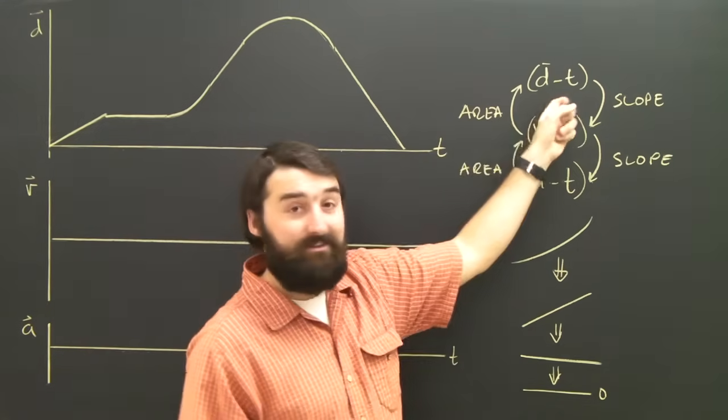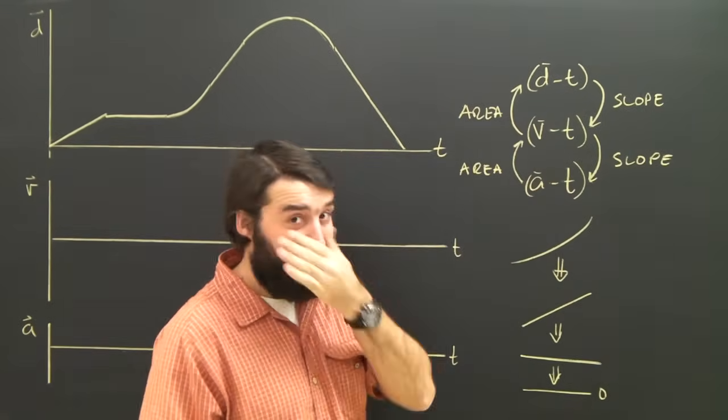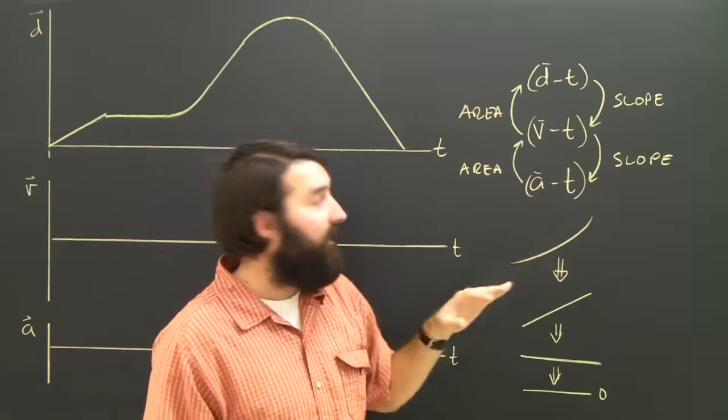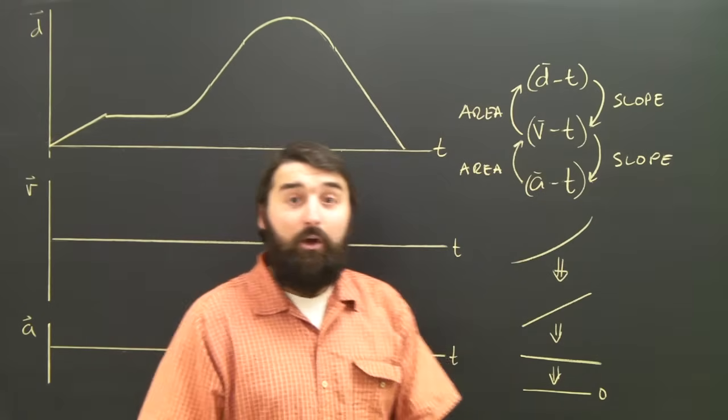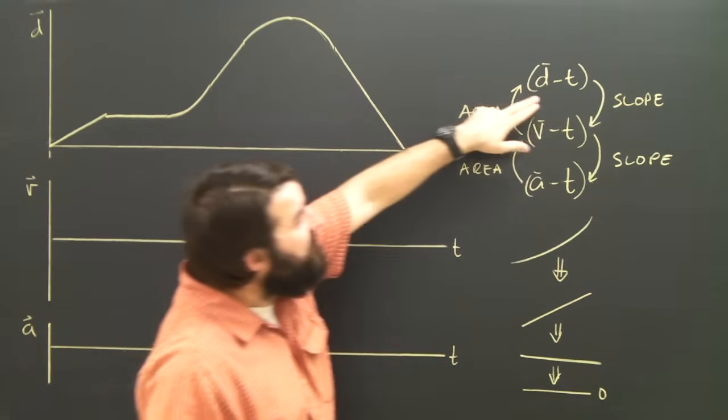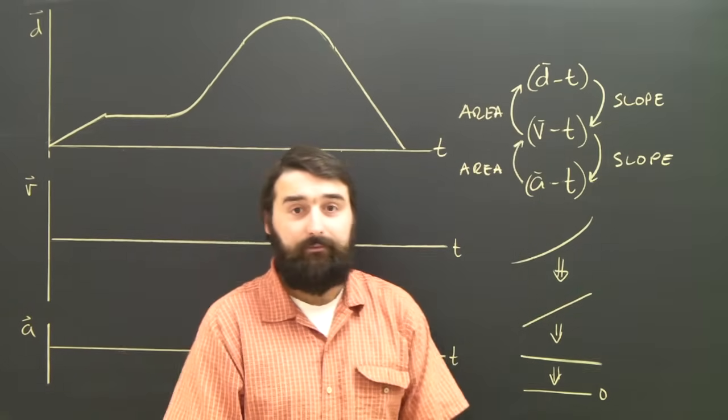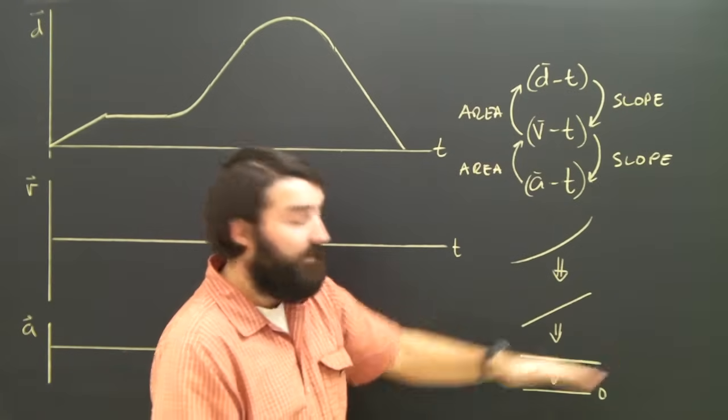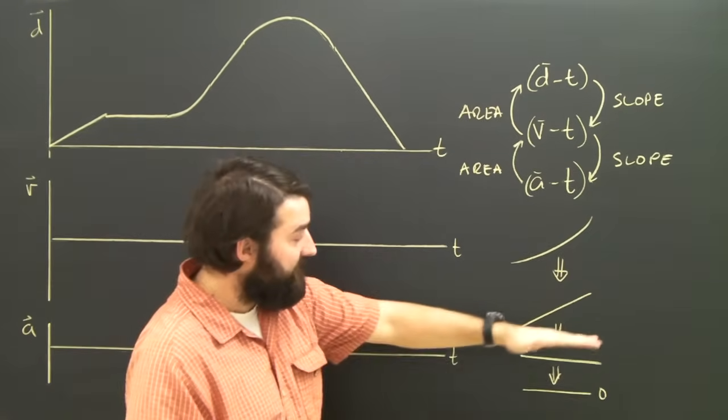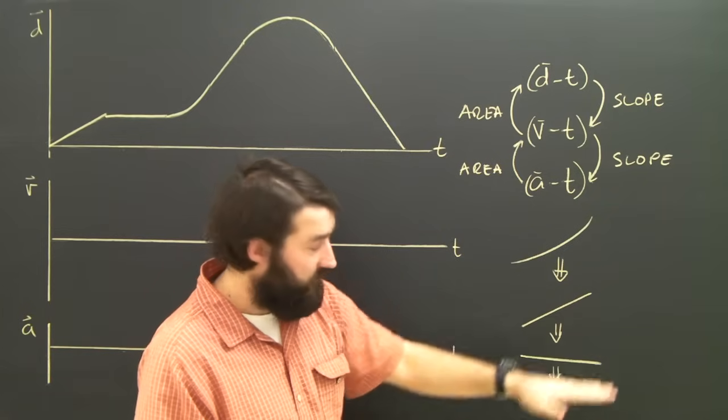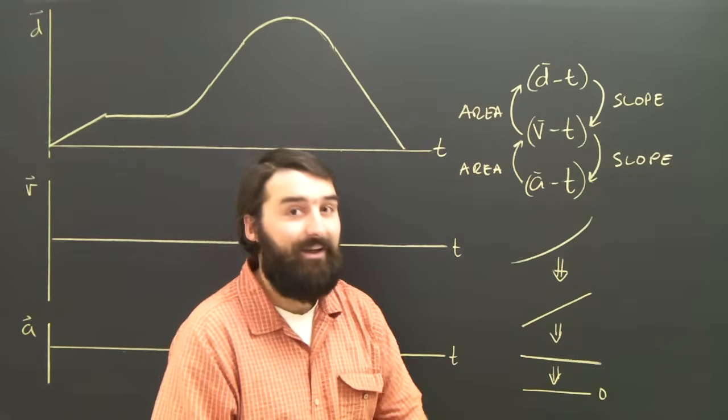As a little reminder here, we know that if we take the slope of a DT graph, we get the velocity, and if we take the slope of a velocity graph, we get the acceleration. Which means in practice that if our DT graph is curved, we take the slope, we're going to get a diagonal line. And if we take the slope of a diagonal line, we're going to get a horizontal line. And if we take the slope of a horizontal line, we're going to get zero, a horizontal line at the zero.